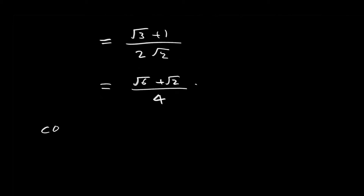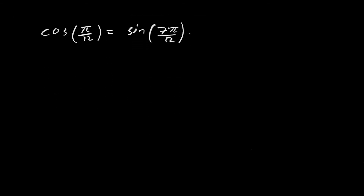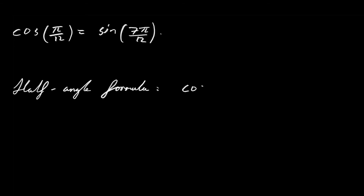So what we've just seen is that the cosine of π over 12 is equal to the sine of 7π over 12. Let's do one last example with the half angle formula. Recall that the half angle formula for cosine from our list of 19 trigonometric identities is: the cosine of θ squared equals 1 plus the cosine of 2θ all divided by 2. This is how we expressed it in our list.